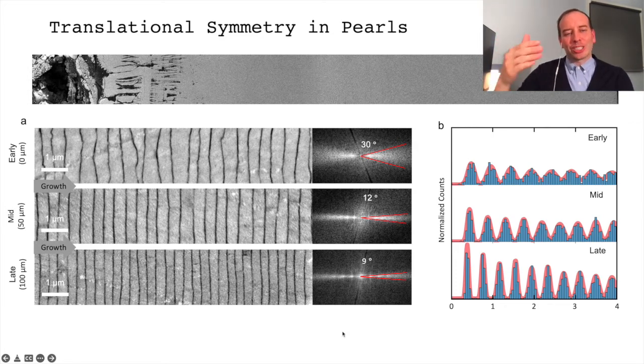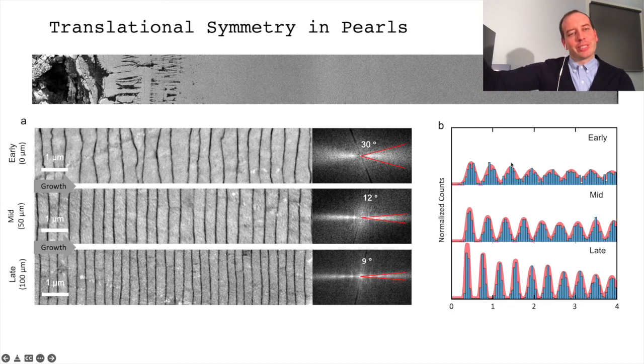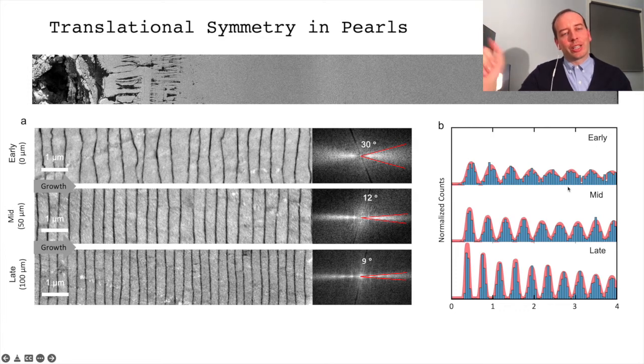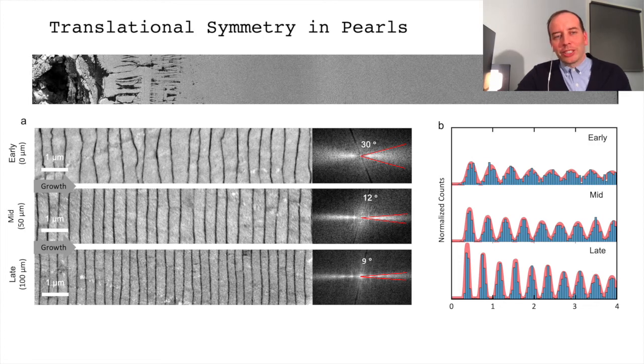The pair correlation functions, that describes the disorder in the system as a function of unit cells to its next-nearest neighbor, and so on, gives us a sense of how long-ranged our periodic order is. In the early, mid, and late nacre, we see many peaks, suggesting that there's periodic order that extends several tablets. The late nacre peaks are very sharp. But in all three cases, we see that the peaks are broadening, suggesting that there is propagating disorder in the system.